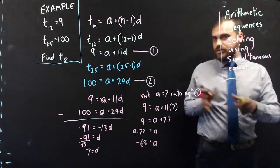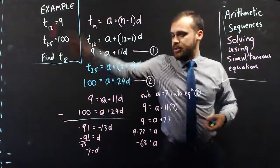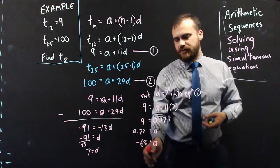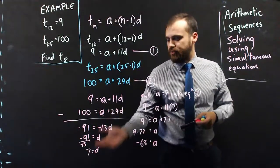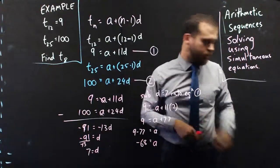This is really good news because now I know that for my arithmetic sequence, the first term was negative 68. And the common difference is 7. I can finish this all off now and find out what term 8 was.